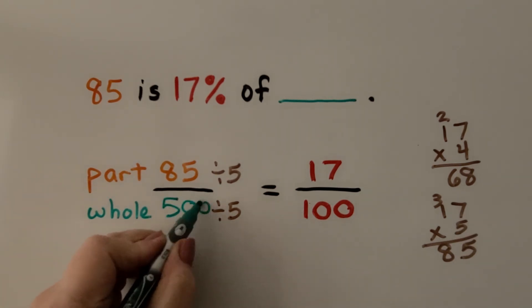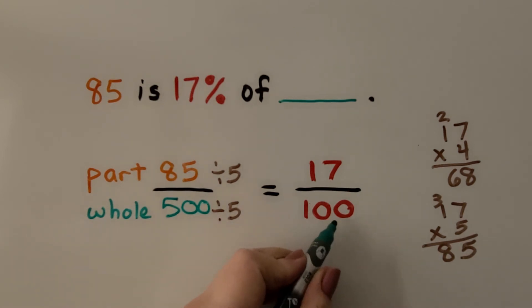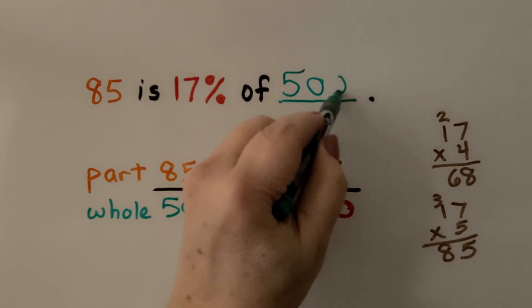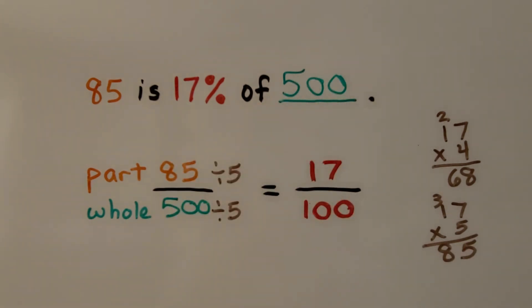This must be 500. Because if we divide 500 by 5, we get 100. This must be 500. 85 is 17% of 500.